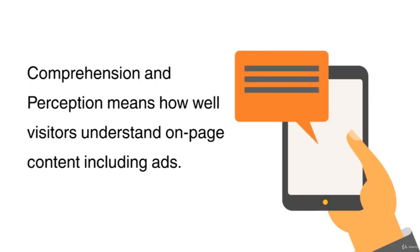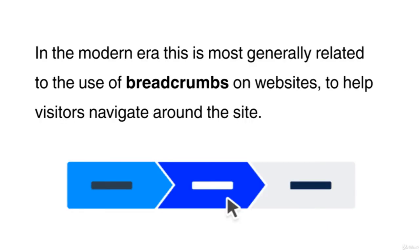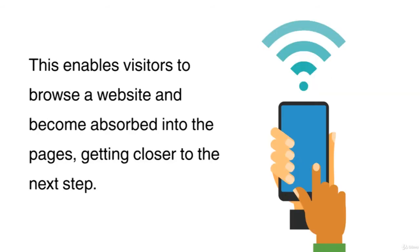Comprehension and perception means how well visitors understand on-page content, including adverts. In the modern era, this is most generally related to the use of breadcrumbs on a website to help visitors navigate around the site. This enables visitors to browse a website and become absorbed into the pages, getting closer to the next step.